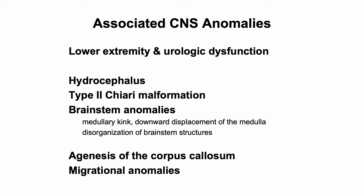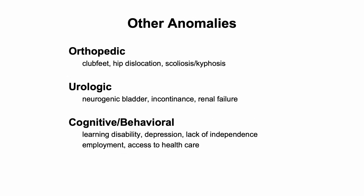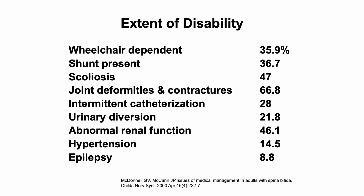There can also be agenesis of the corpus callosum and migrational anomalies in the brain. Other systems are affected as well — orthopedic conditions resulting from the neuromuscular abnormality can cause club feet, dislocated hips, and later spinal deformities. Urologic dysfunction can occur both at birth and progress later in life, involving varying degrees of lack of continence and ultimately renal failure if untreated. Patients can have significant cognitive and behavioral disturbances. The extent of disability is substantial, and many patients can have several issues with a substantial impact on quality of life, including requirements for a wheelchair, hydrocephalus, spinal deformity, and orthopedic issues.